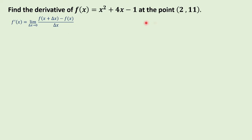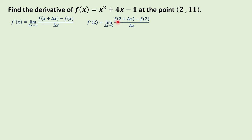To get the derivative at x equals 2, we need to compute f prime of 2 as the limit of f of (2 plus delta x) minus f of 2 over delta x. Since we already know the value of x, we just need to substitute 2 into our x variable.